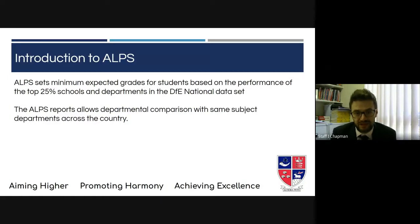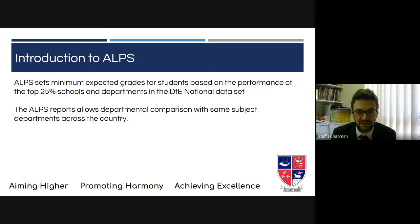ALPS sets minimum expected grades, otherwise known as MEGs, for students based on the performance of the top 25% of schools and departments in the Department for Education's national data set. The expected grades that we give to students are calculated on the performance in the top 25% of schools — they are very aspirational. At a school level, the advantage is that the ALPS reports we subsequently get will allow us to compare how students doing biology at Myrhill County are progressing against students doing biology at other schools. It creates a really robust measure which encourages us to make sure we're providing the best quality of education for our A-level students.